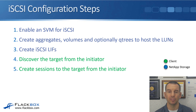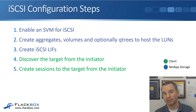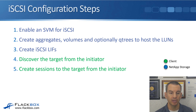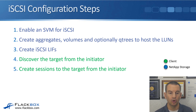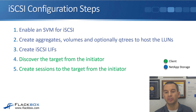Looking at iSCSI first and the configuration steps — I'll give you a summary here; in a later lecture we're going to do this with a lab demo. When you're configuring iSCSI, first enable an SVM for iSCSI: create the SVM and enable the iSCSI protocol on there. Next, create your aggregates if you don't have them already, your volumes, and optionally qtrees to host the LUNs.